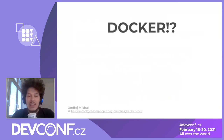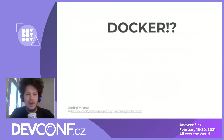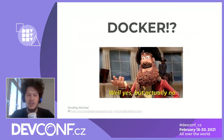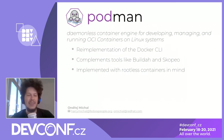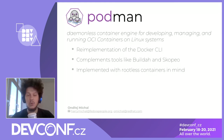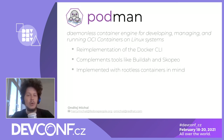When I say containers, most of you will ask me: so it's Docker, right? And I say, yes — but actually no. We are not really using Docker; we use Podman, which is a daemonless container engine for developing, managing, and running OCI containers on Linux systems. I would describe it very quickly as an implementation of the Docker CLI. It complements tools like Buildah and Skopeo, and mainly it was implemented with rootless containers in mind.